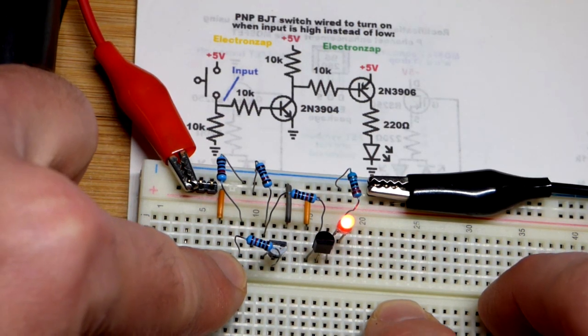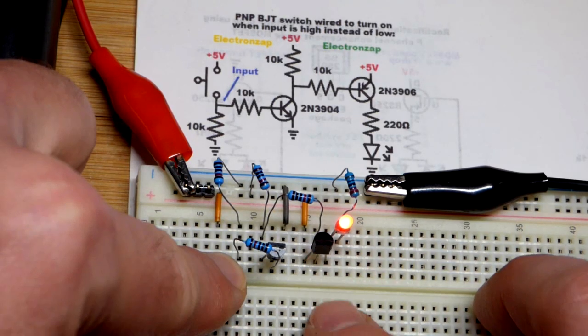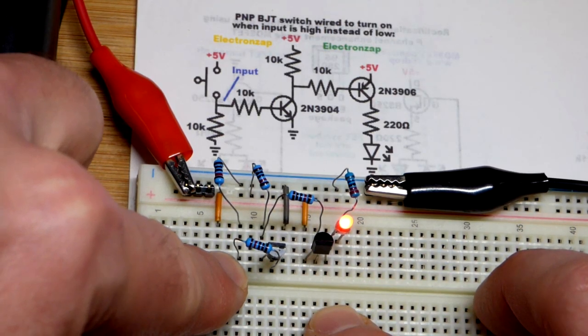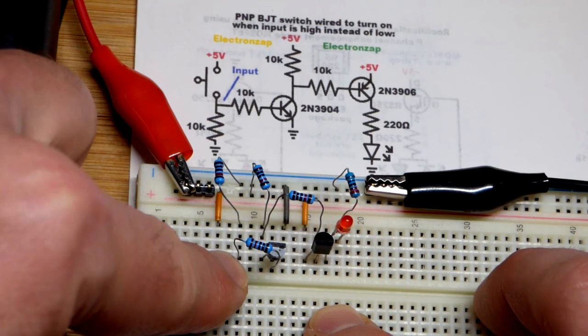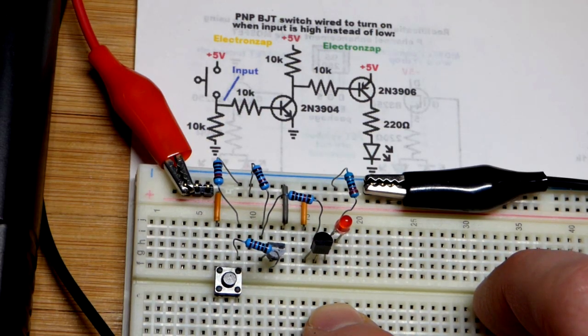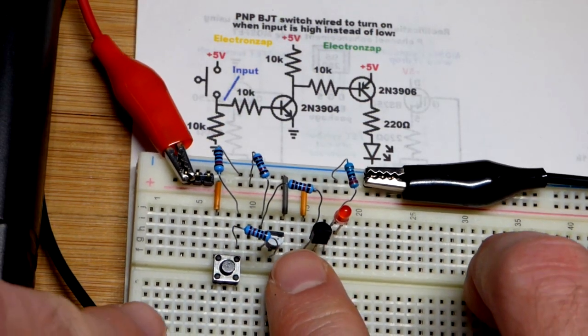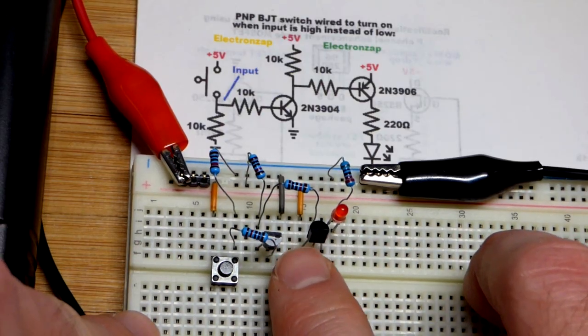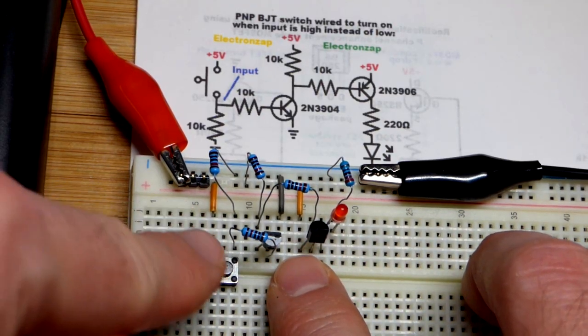A high input normally turns a PNP bipolar junction transistor off, and it would be on when I release the switch. But we have an NPN bipolar junction transistor that converts that signal.